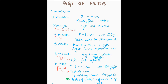At four months, the length is 16 centimeters — the square of four — and the weight is 120 grams. Sex can also be recognized at four months. To remember: F for female, F for four, so at four months the gender can be recognized.